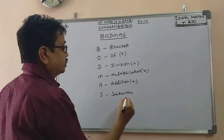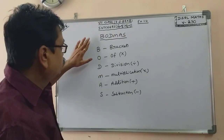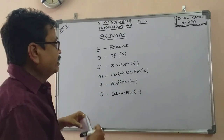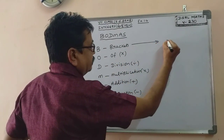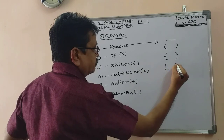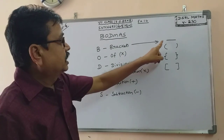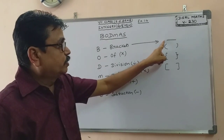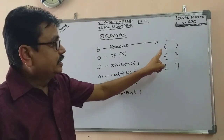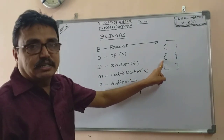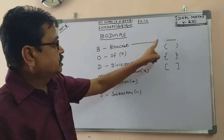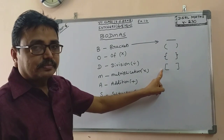BODMAS is used for simplification. The order is: Brackets, Of, Division, Multiplication, Addition, Subtraction. There are four types of brackets: Viniculum (bar), Small Brackets, Curly Brackets, and Square Brackets. We open brackets in this order.